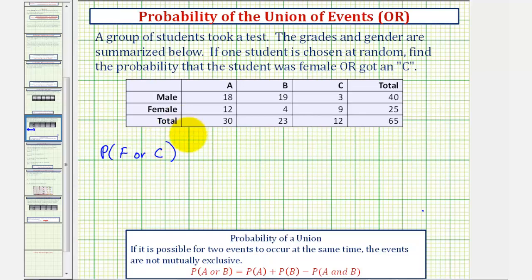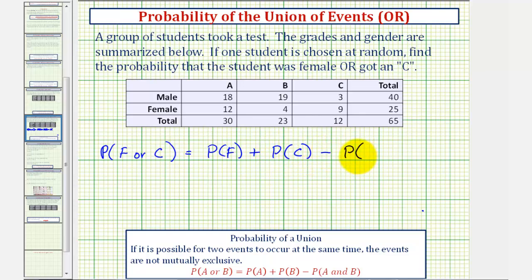This probability is equal to the probability of selecting a female, plus the probability of a student receiving a C, minus the probability of a student being a female and receiving a C.